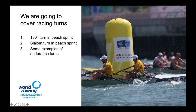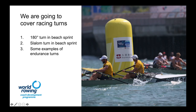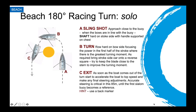In this video we're going to be looking at racing turns — two types of turns from the beach sprint and some examples of turning in the endurance format. Let's start with the 180 turn in beach sprint. I've developed a diagram with three phases: the A phase, which is the entry into the turn; the B phase, which is the main momentum of turning around the buoy; and the C phase, which is the exit.